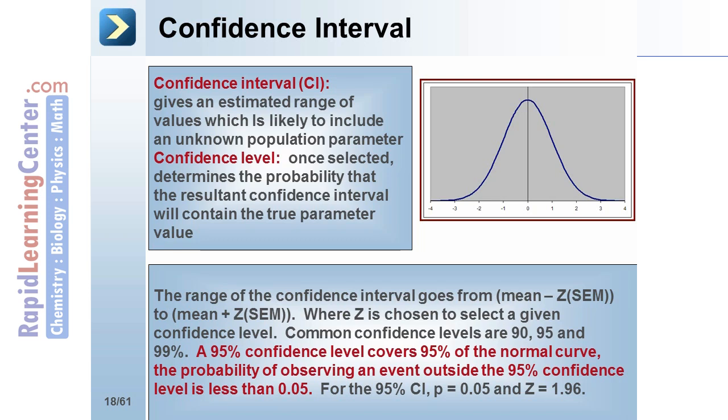The range of the confidence interval goes from mean minus z times SEM to mean plus z times SEM, where z is chosen to select a given confidence interval. Common confidence levels are 90%, 95%, and 99%. A 95% confidence level covers 95% of the normal curve and the probability of observing an event outside the 95% confidence level is less than 0.05. For the 95% confidence interval, p equals 0.05 and z equals 1.96.